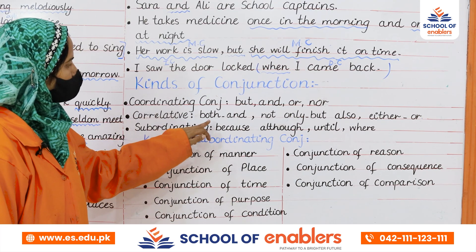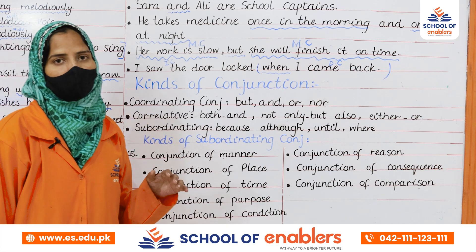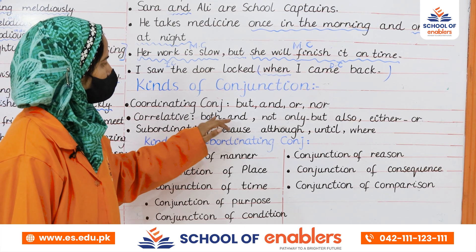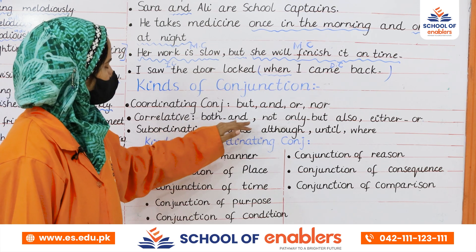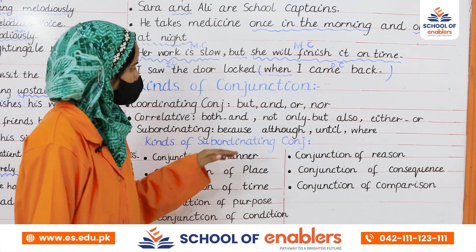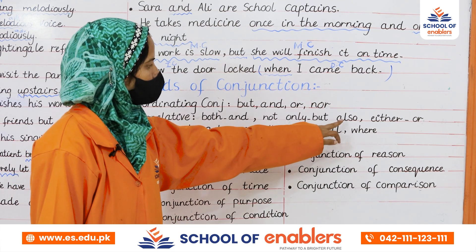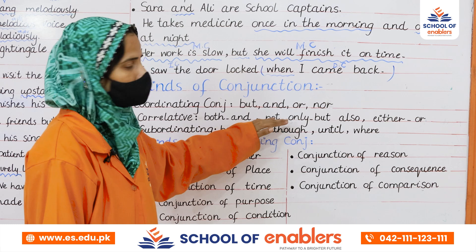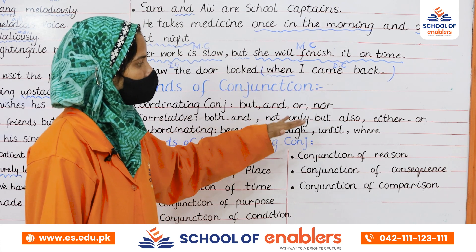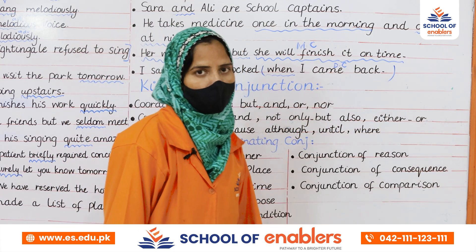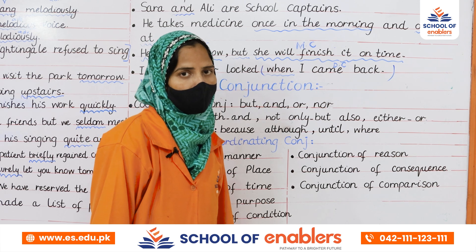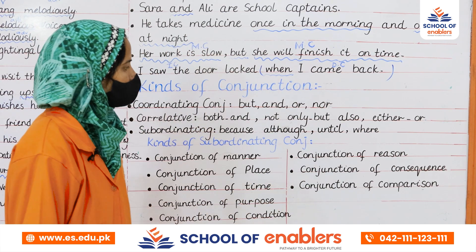The second type is correlative conjunction. As the name suggests, it comes in pairs — like 'both...and,' 'not only...but also,' and 'either...or.' These pairs show that both parts of the sentence have the same level. For example: 'You should either tell your parents or inform the police' — you have a choice between two options.